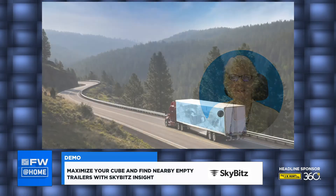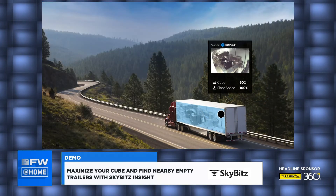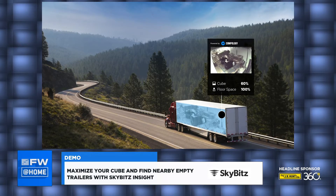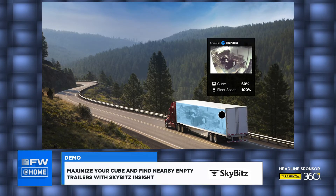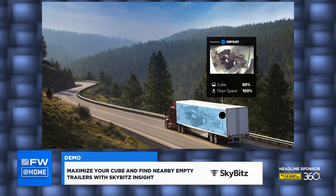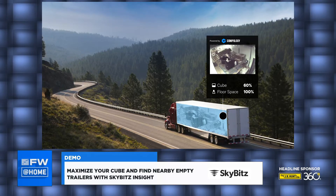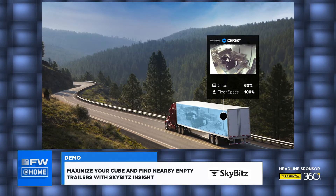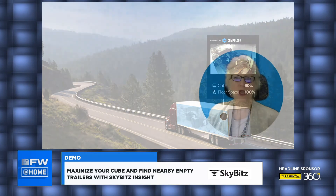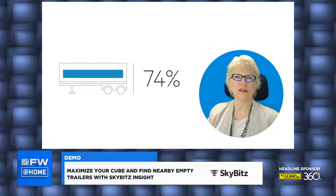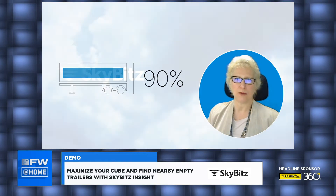With the SkyBits SkyCamera solution, now your trailers won't leave with a cube less than your KPI unless you decide that it should. In this demo scenario, imagine that my organization's goal is to improve the capacity shipped in each load. We've set our KPI goal that no trailer should leave a distribution center with less than a 90% cube.